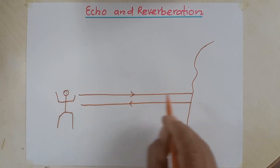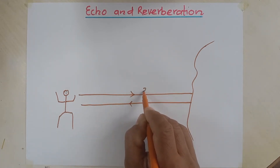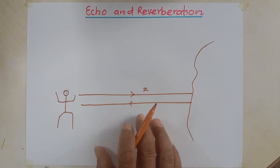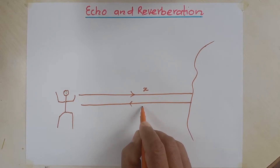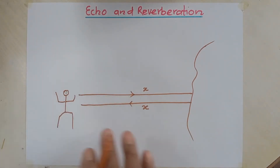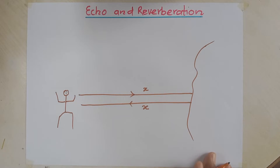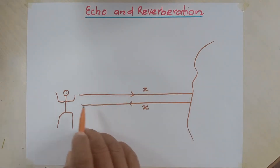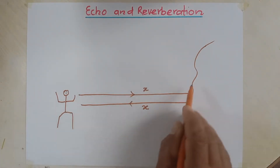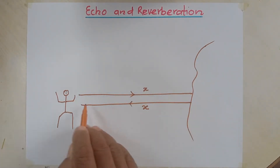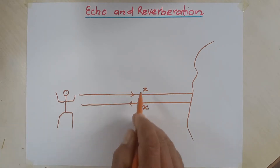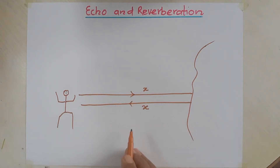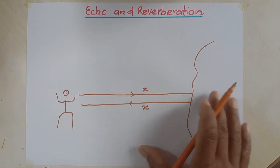Let's say the distance between this person and the sound reflecting surface is X. When the sound returns back, it covers the same distance again. So the total distance covered by the sound — going up to the surface and coming back to the ear of this person — is 2x.